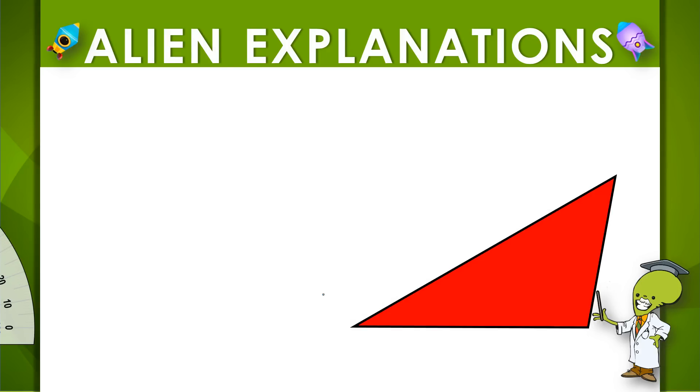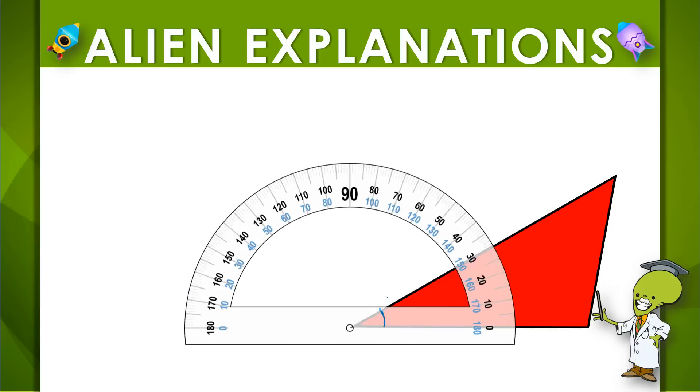So if I wanted to measure this angle on a triangle, I would line up my protractor along that vertex and see the edge of the triangle goes right across to 0.